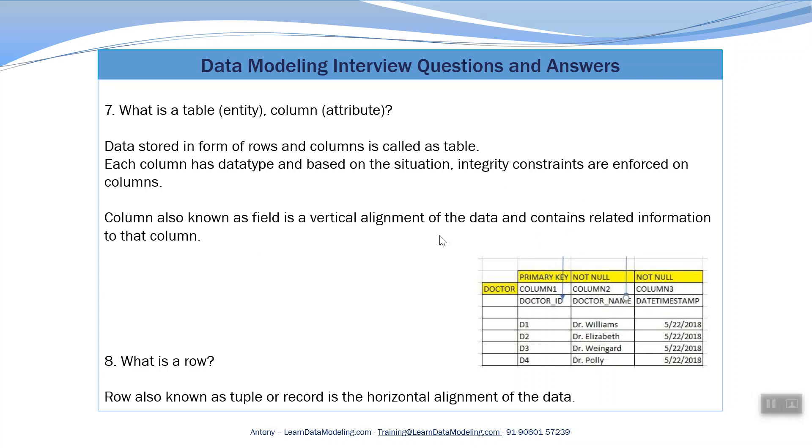Column, also known as field, is a vertical element of the data and contains related information to that column. What is a row? Row, also known as tuple or record, is a horizontal element of the data. So row is a horizontal element and column is a vertical alignment of the data.